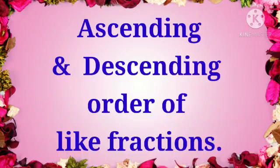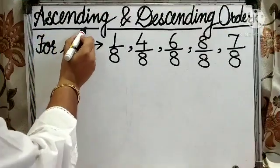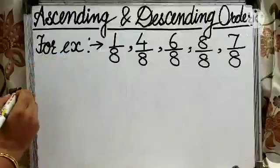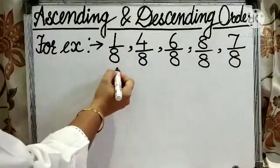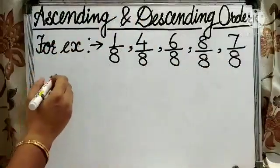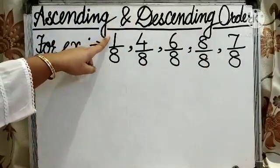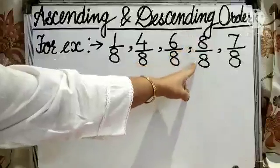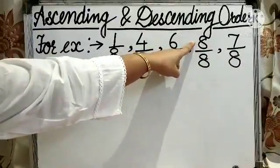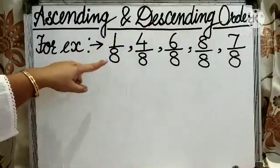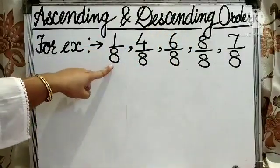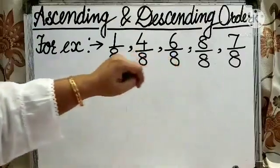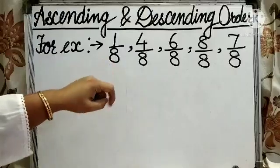First of all we are going to study about ascending and descending order of like fractions in this video. Children, what is ascending and descending order of fractions? When the denominators of the fractions are same, then the fraction with the smallest numerator will be considered as the smallest fraction and the fraction with the greatest numerator will be considered as the greatest fraction. Here you can see that the denominator in each of the given fraction is 8, means we have the same denominators.